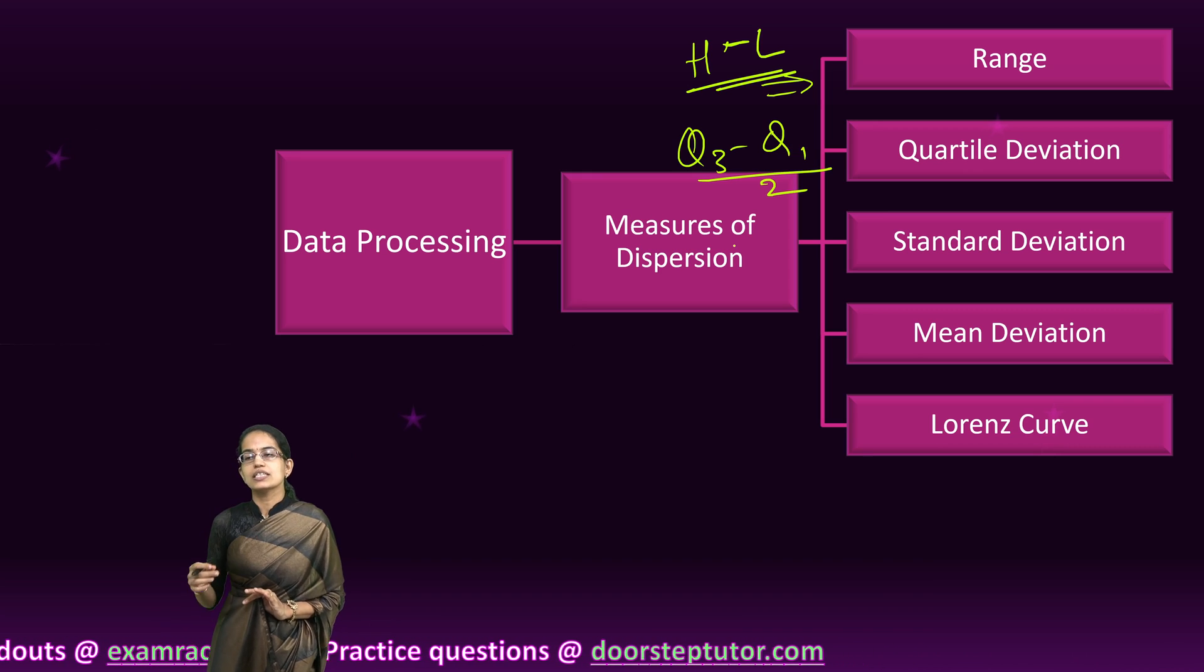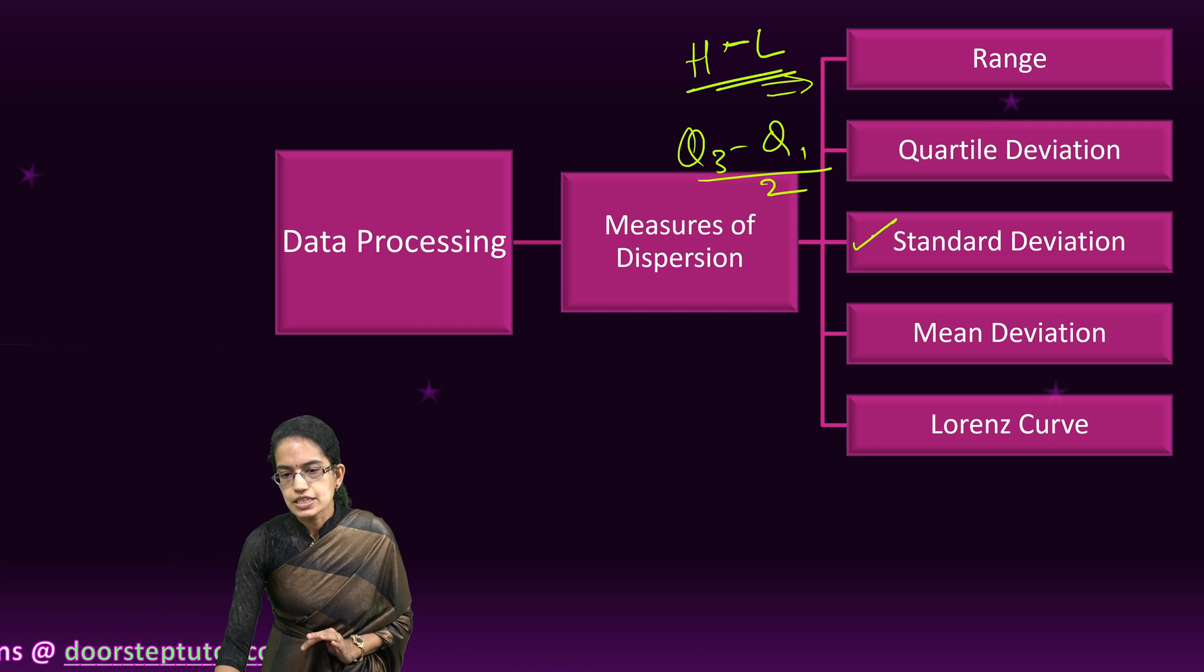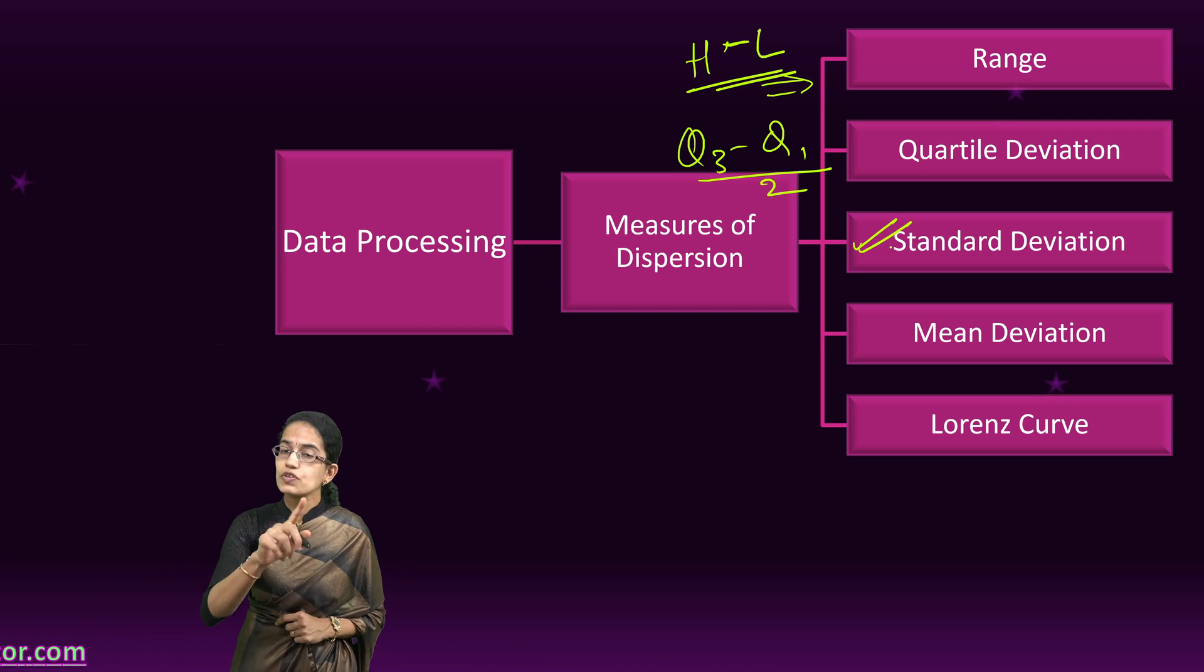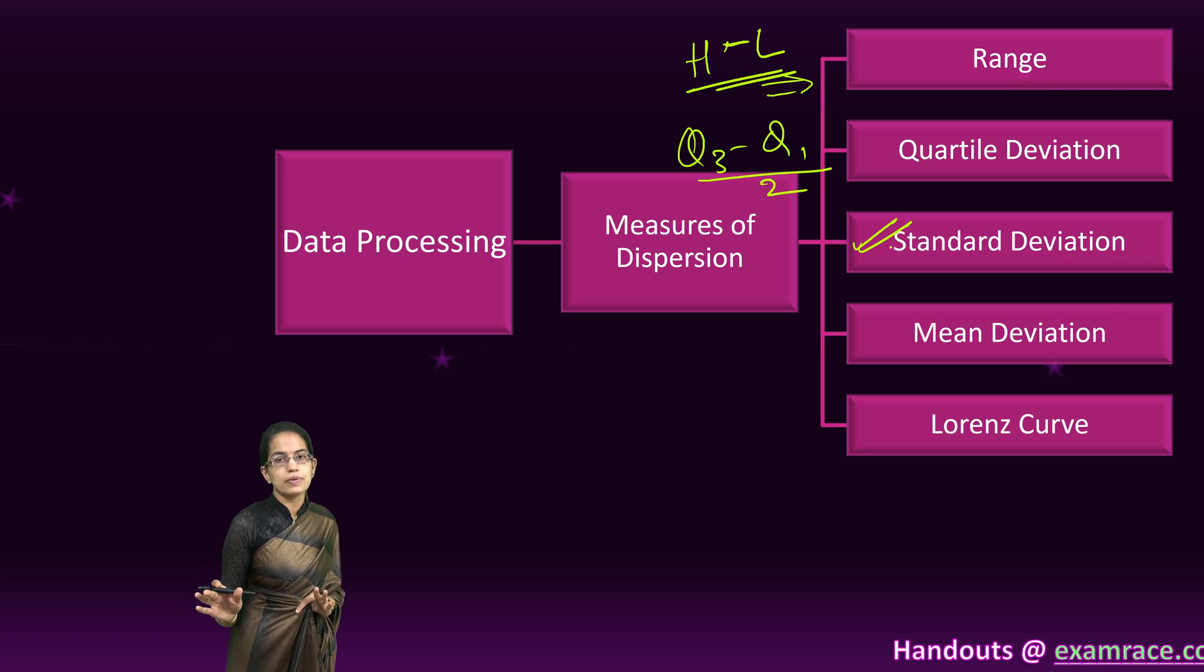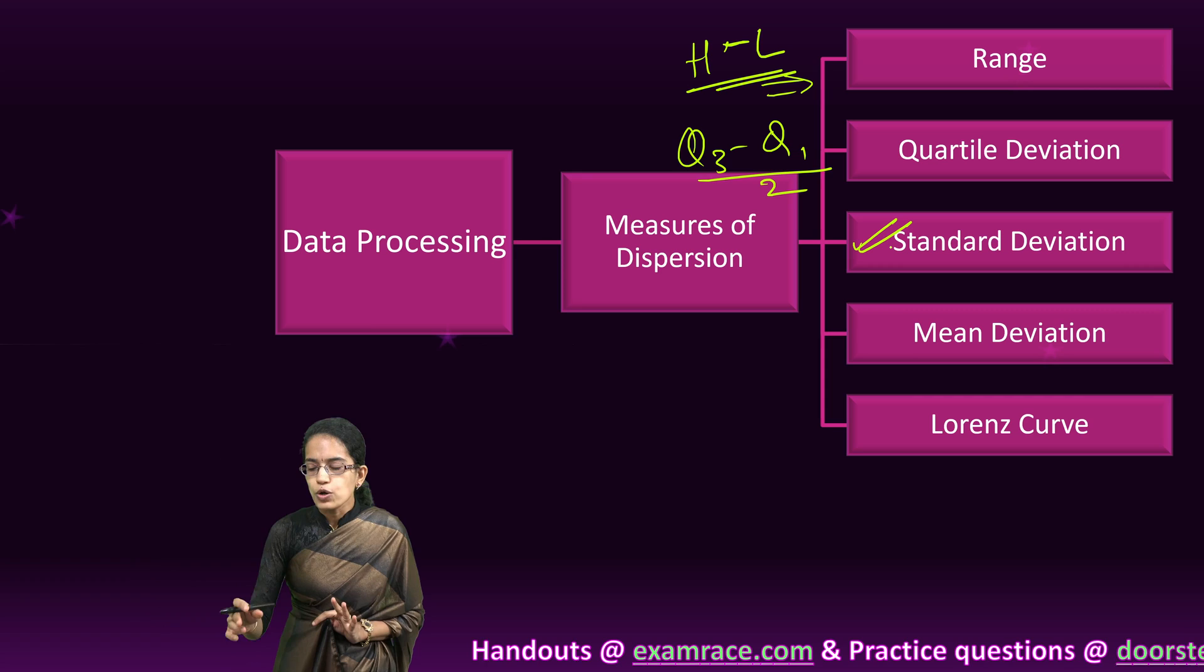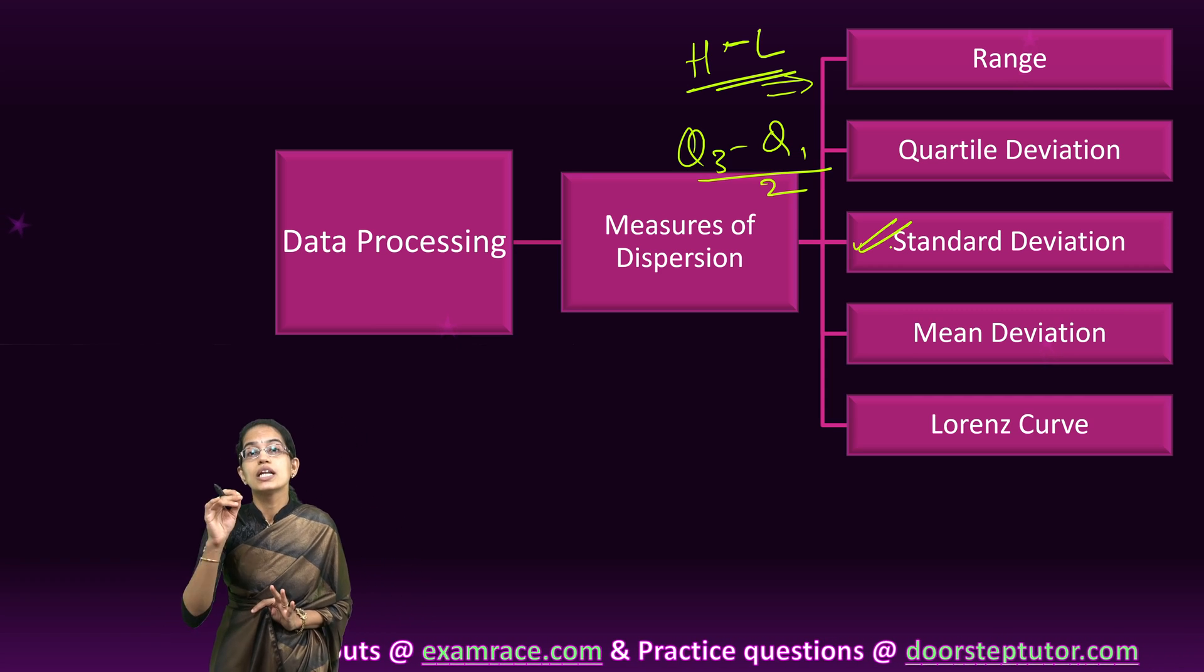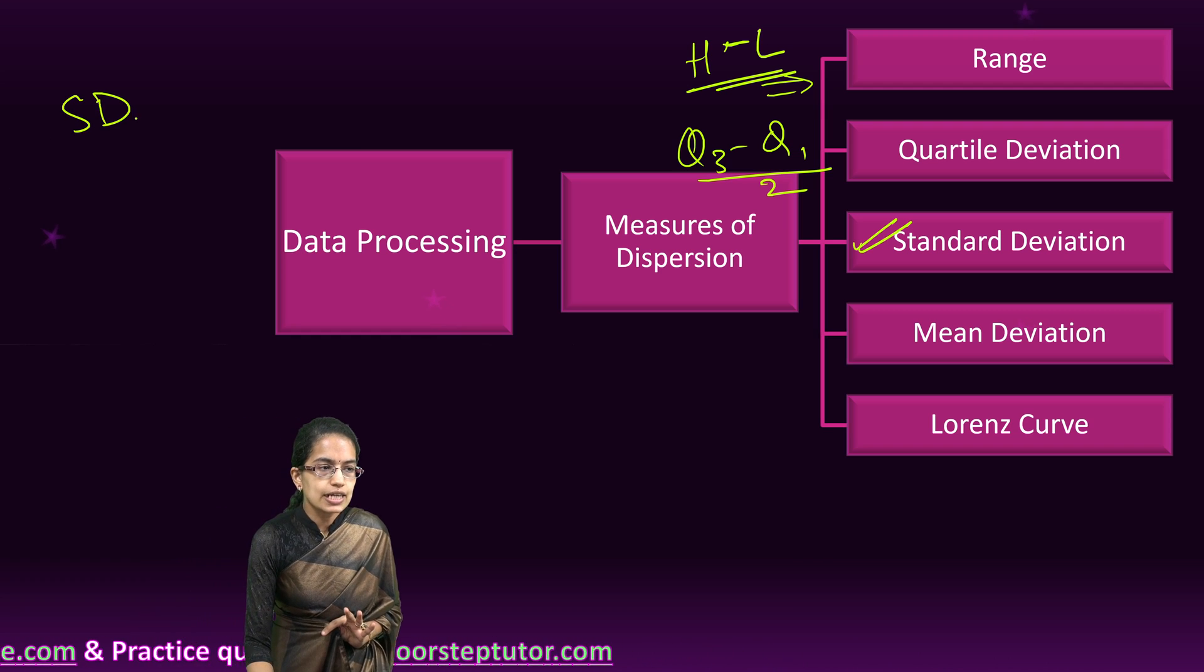The standard deviation is the absolute measure of dispersion. Since for the standard deviation we also know the mean, we can also find out the coefficient of variation, and coefficient of variation gives the relative measure of dispersion.